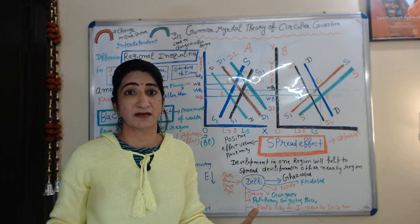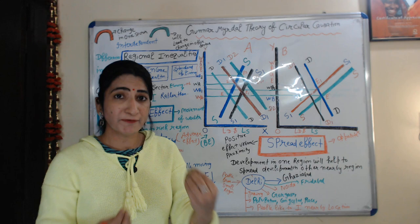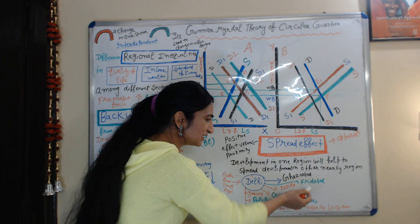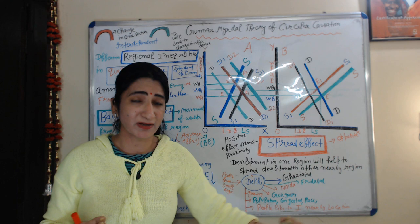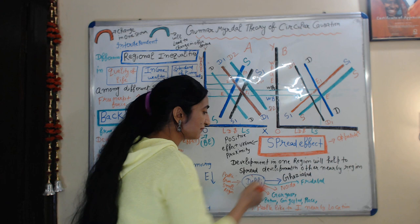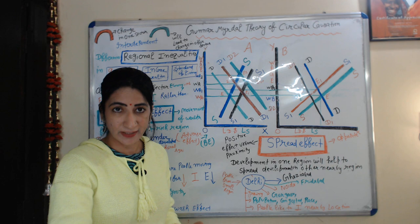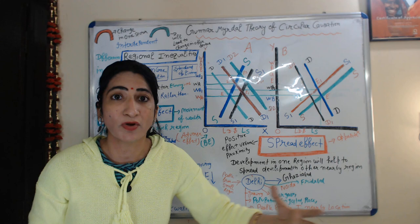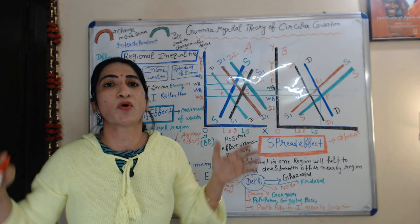Because population in Delhi is growing very fast, Delhi is becoming very congested. It is very difficult to find space here for living, investment, or business. So many people prefer to invest in nearby locations such as Ghaziabad, Faridabad, Noida, and Gurgaon. Because of Delhi, these nearby regions are also growing — investment and job opportunities in these regions are also growing. This is called the spread effect.